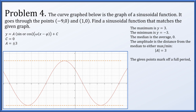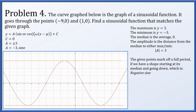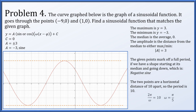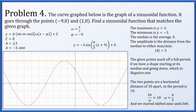The given points, negative 9, 0 and 1, 0, mark off one full period. The shape starts at the median value and goes down, which is a negative sine curve. So we want a to be negative 3 and use a sine function. The two points are a distance of 10 apart, so the period is 10. Therefore 2 pi over omega equals 10, giving omega equals pi over 5. We shifted 9 units left because the period starts at x equals negative 9, so phi equals negative 9. Thus y equals negative 3 times the sine of pi over 5 times the quantity x plus 9, all plus 0.